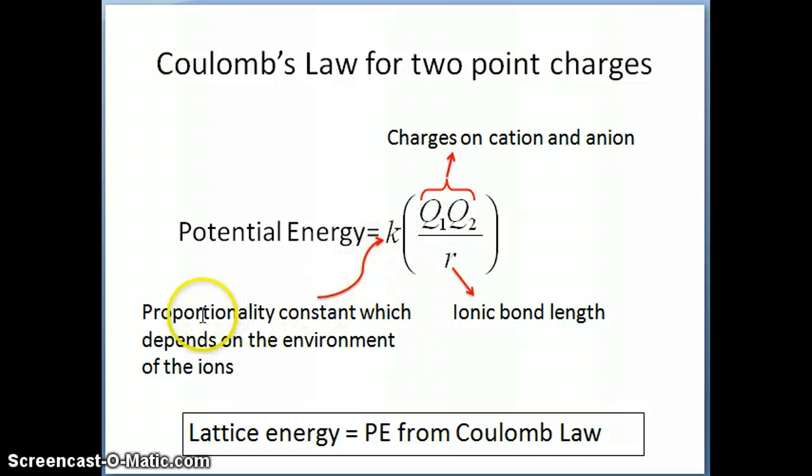The K is a proportionality constant and that depends on the environment of the ion - if it's surrounded by water molecules it's going to have a certain value of K, if it's surrounded by gas it's going to have a different value of K, and so on. But we're not going to necessarily calculate the energy of the attraction, but what we're going to do is compare relative strength of interaction or relative lattice energy. So what we're going to be interested in is this Q1, Q2, and R.